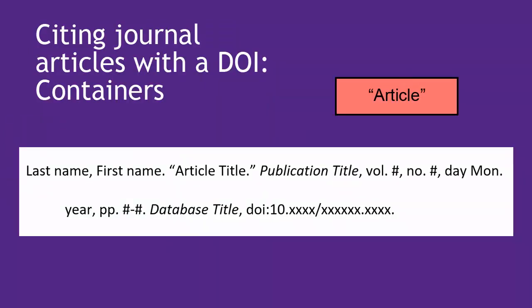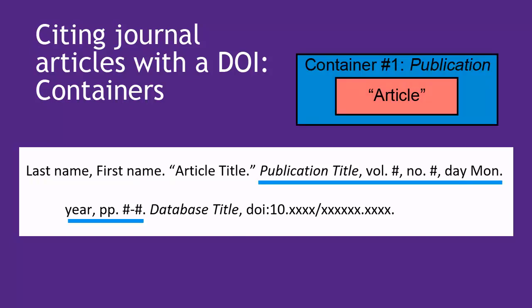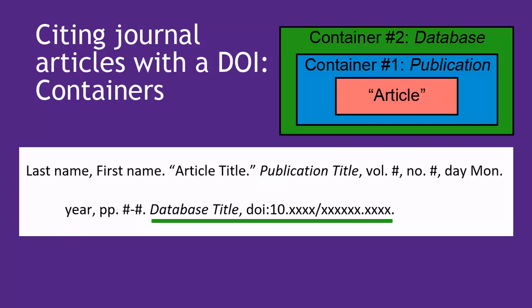Let's look at our template citation again. MLA uses the same containers concept for articles as for books. The article is the actual work we're citing, but it was published within container number 1, the publication. Notice how the publication details are formatted: lowercase "vol." period, "no." period, the abbreviated form of the month, and "pp." period before the page numbers. Finally, we accessed it from container number 2, the database.